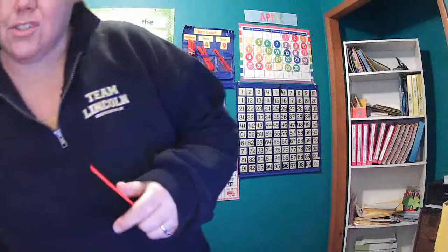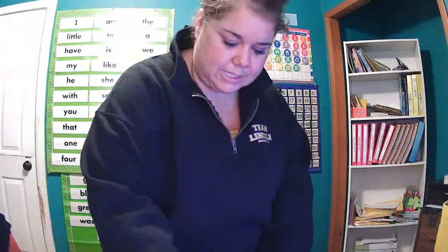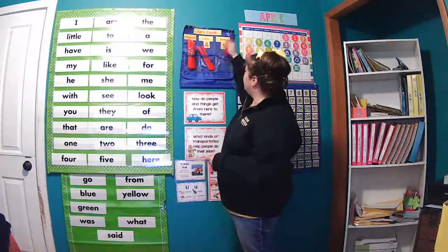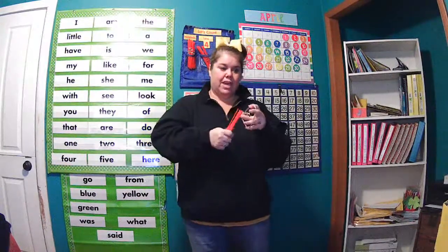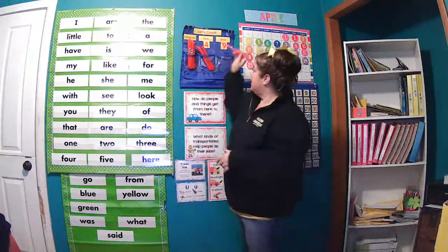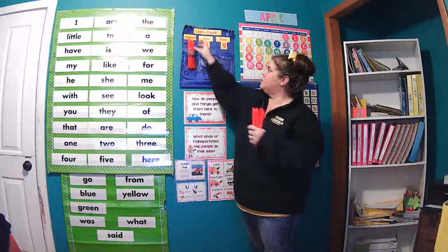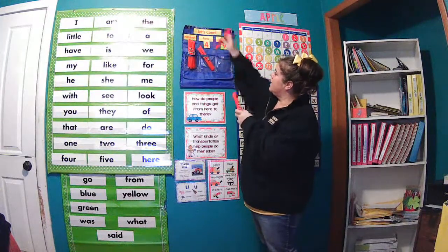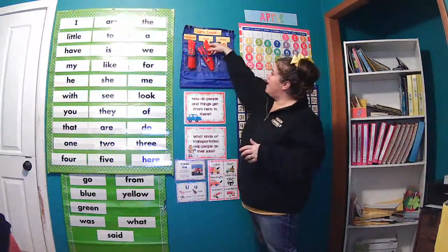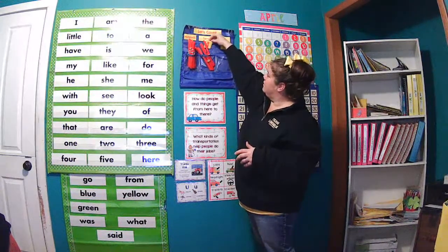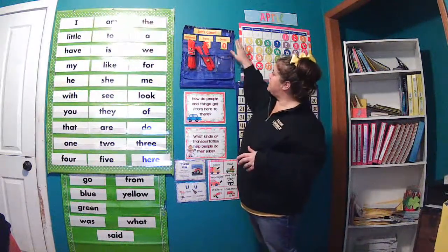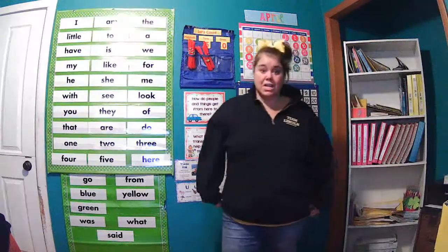We're going to add another straw today to our place value chart, and this is going to make number 10. We had 9 yesterday — 1 more makes 10, which means we need to create a bundle. We'll wrap our rubber band around there and it's going to go into the tens place. So we have 1 bundle of 100, and now we have 5 tens and 0 ones. So 150 is our number today.